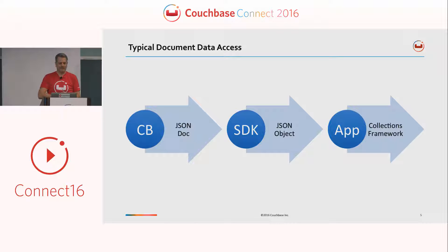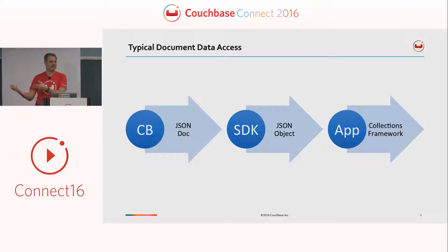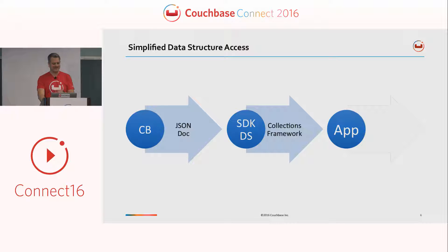Here's my oversimplified understanding of the world when we're talking about typical document data access — you've got these kind of three stages. Couchbase serves up a document, one of our SDKs will give you a JSON object back, and then your application might convert that into a collections framework or some kind of array object. We want to shorten that up by delivering the collections to you directly from your call to the Couchbase server, from the SDK data structure SDK — that's what the DS means there.